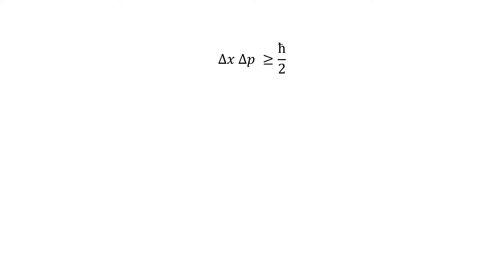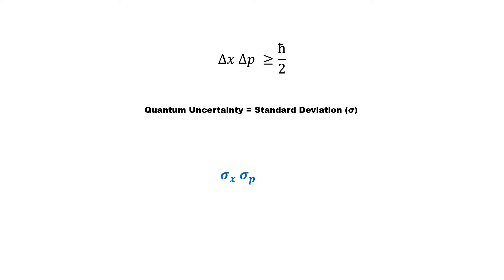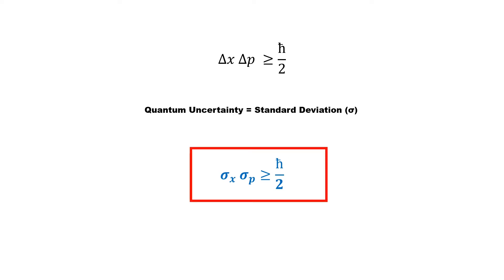Sometimes the uncertainty relation between position and momentum is represented using delta, but actually this relation is not in its standard form. This is because the symbol delta is used loosely for uncertainty. The quantum uncertainty in the measurement of a quantity is actually the standard deviation in the measurement of that quantity, which is represented by sigma, not delta. Therefore, the standard form of the uncertainty relation between position and momentum is given by this equation.